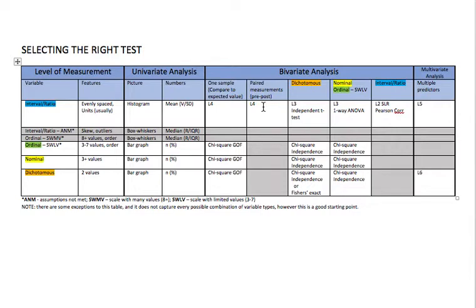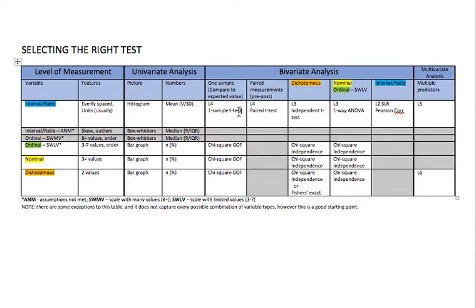Lesson four includes two different tests: the paired t-test and the one-sample t-test. These two are very much related, just as the independent t-test and one-way ANOVA are related to each other. In the one-sample t-test, just like the chi-square goodness of fit, we take a continuous variable and compare it to an expected or population value — for example, testing whether the average height in a population is five foot six. We're only measuring one variable, but now it's an interval ratio variable instead of a categorical one.